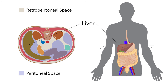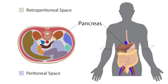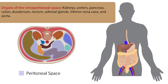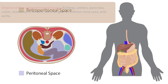Other organs located near the kidney but not within the retroperitoneal space are the liver and spleen. However, the pancreas is located within the retroperitoneal space and lies ventral to the kidneys. Not shown in the transverse section are the ureters, rectum, esophagus, and adrenal glands, all of which lie near the kidney and within the retroperitoneal space.